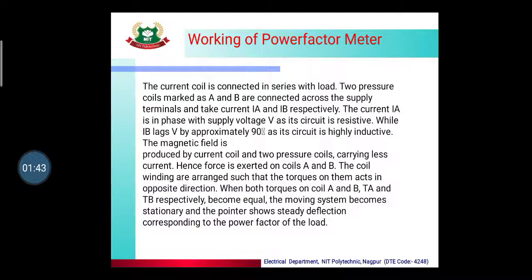The magnetic field is produced by the current coil and the two pressure coils carrying current. Hence force is exerted on coils A and B. The coil windings are arranged such that the torques on them act in the opposite direction.